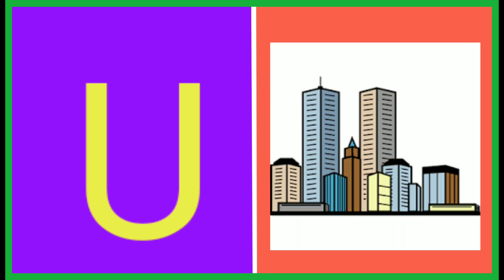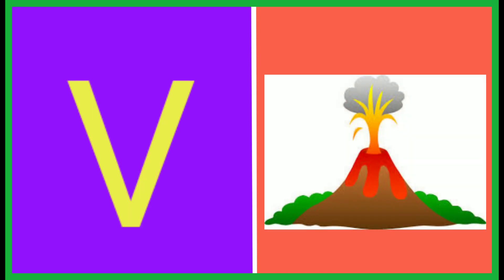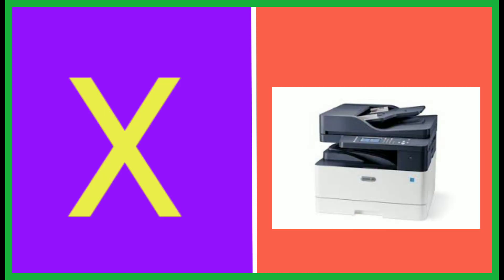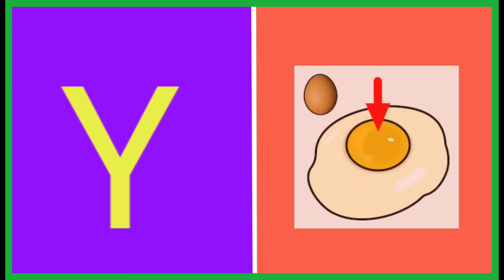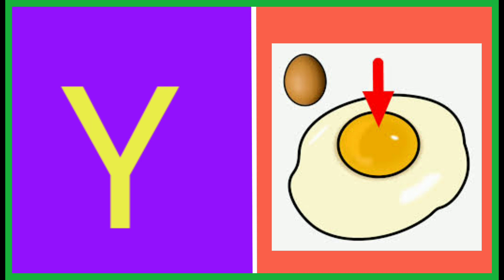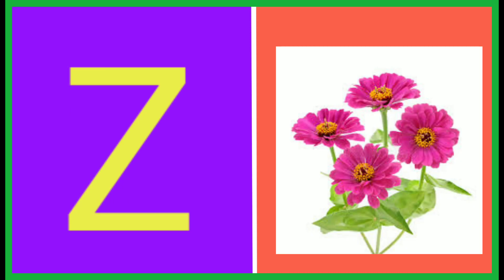V for Volcano, W for Wall, X for Z machine, Y for Yolk, Z for Zinnia.